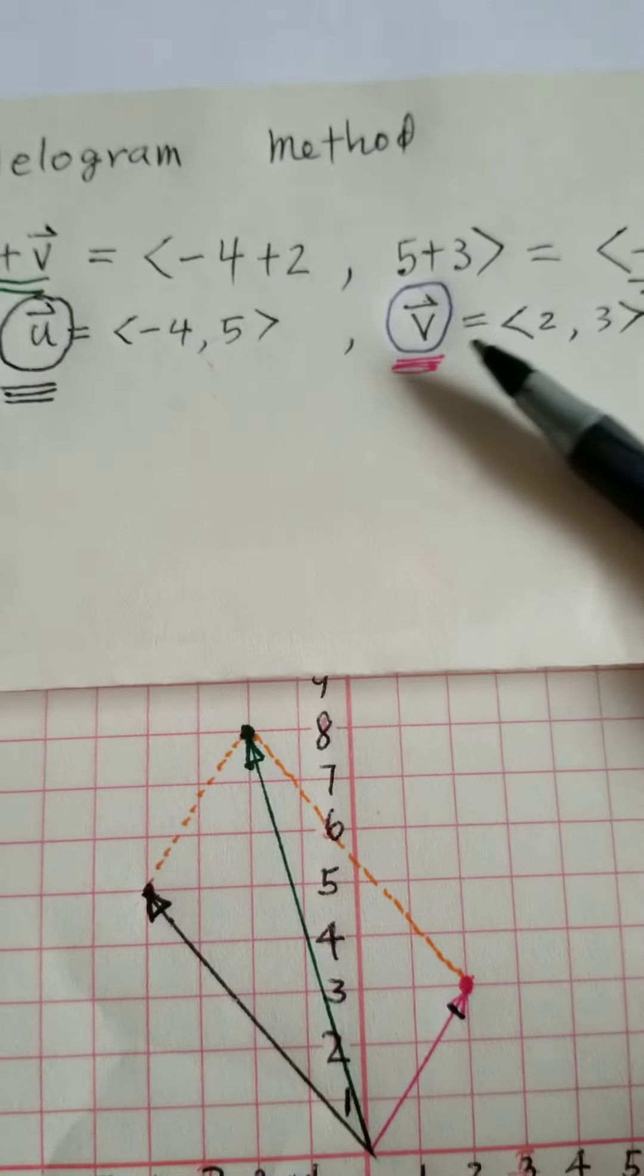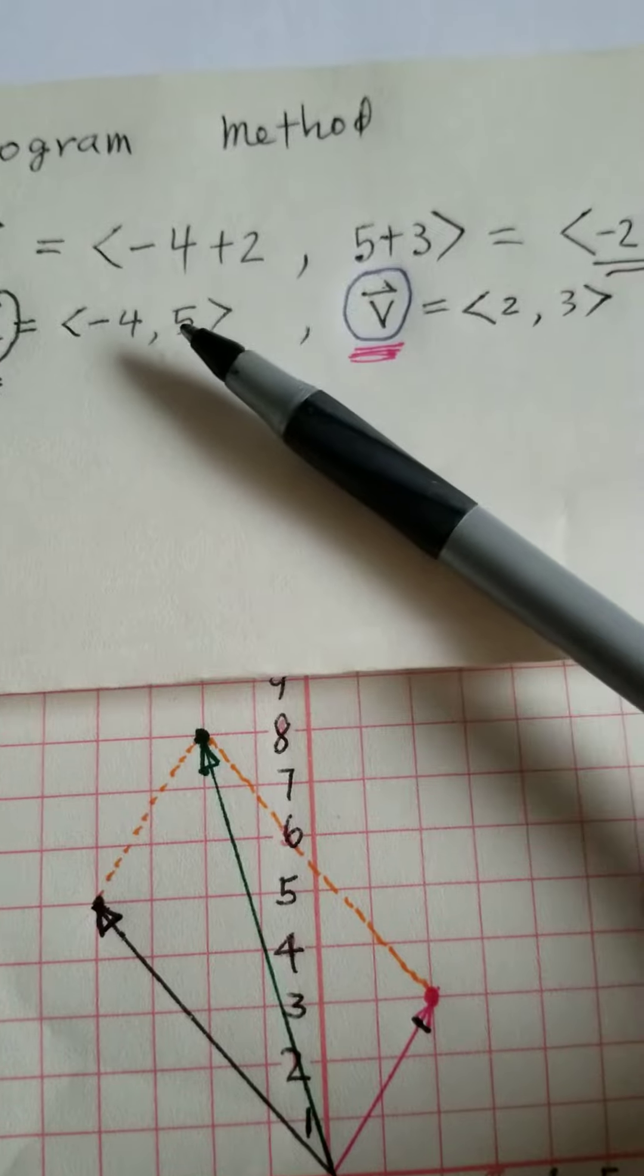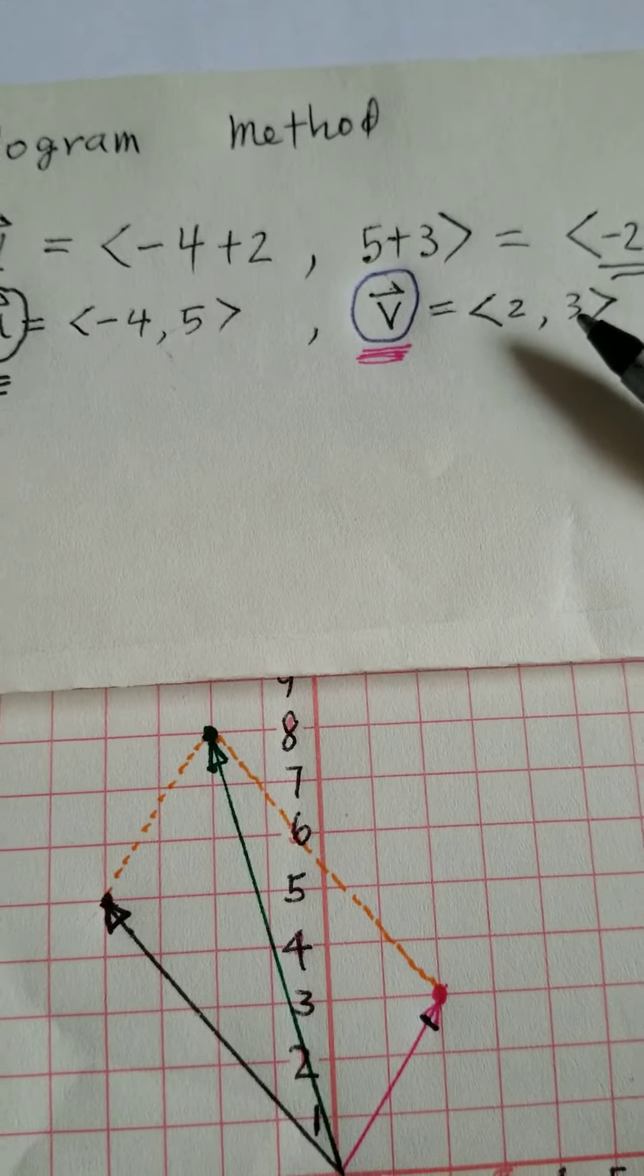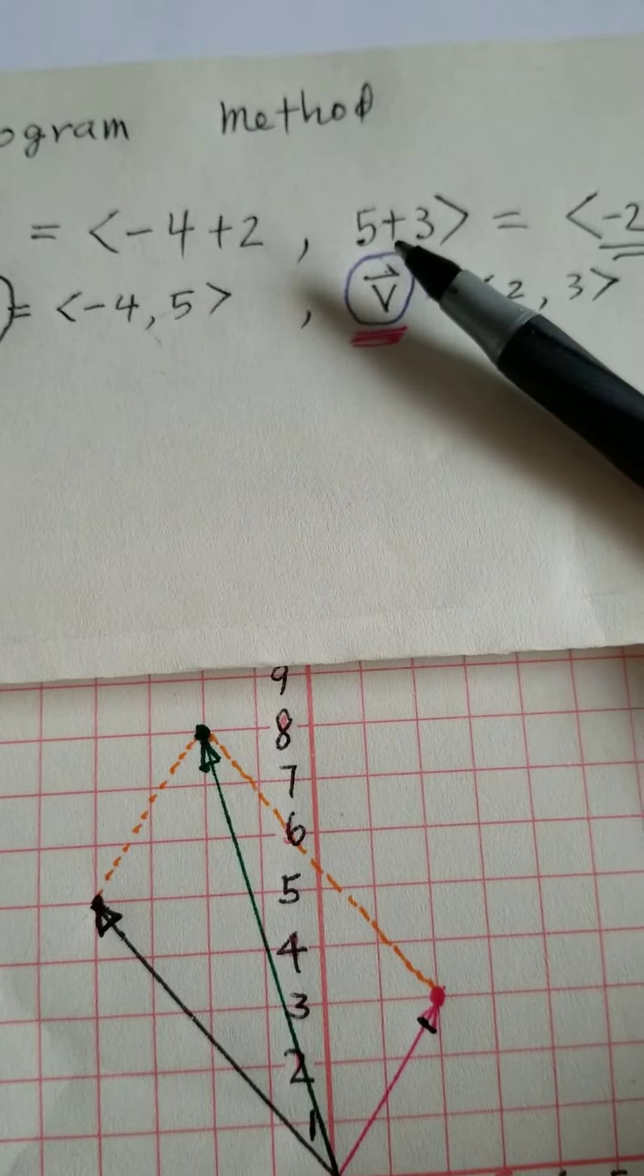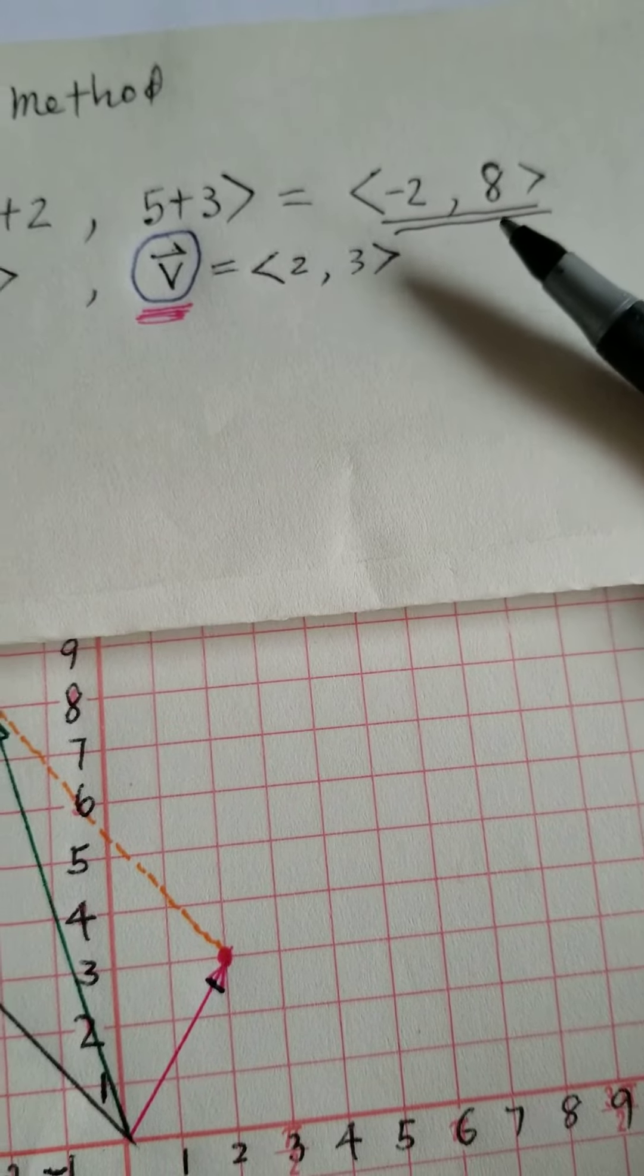Negative 4 plus 2 right here. 5 plus 3 right here. The answer should be negative 2 and 8. So we know that first.